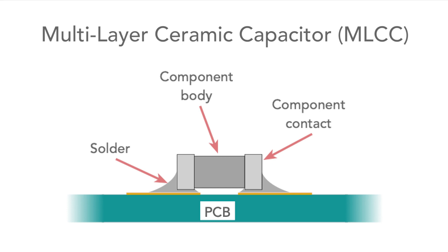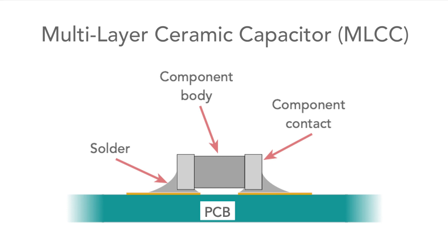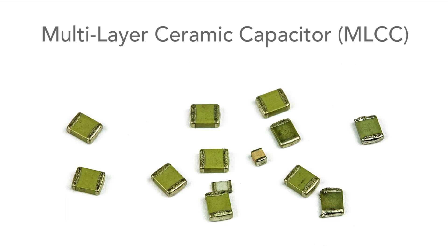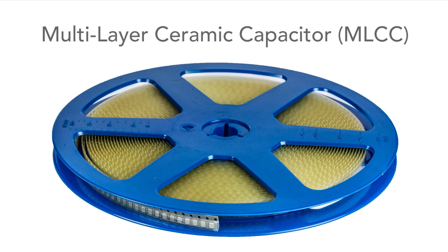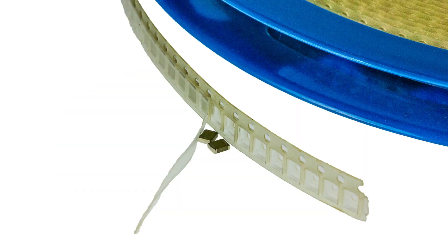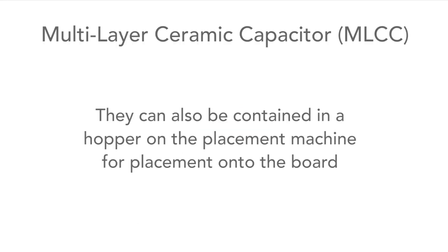This is very important for surface mount capacitors, which need to be very small. For surface mount capacitors, there are connections on either end of the component that are soldered directly onto the board. These capacitors are intended for automated production and are often supplied in reels, or fed loose into a hopper on the placement machine.